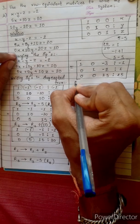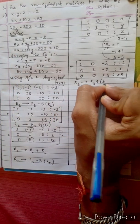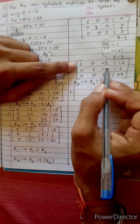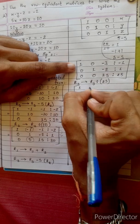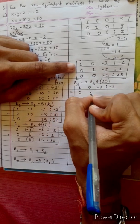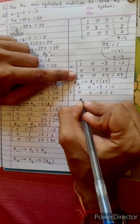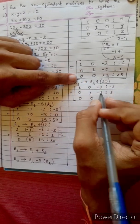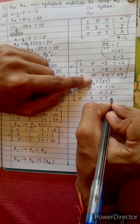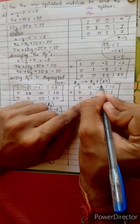Now change R3 by dividing by 25. 25 divided by 25 equals 1. So the new R3 is [0, 0, 1 | 1]. Now we need to get zeros in the third column of the other rows.